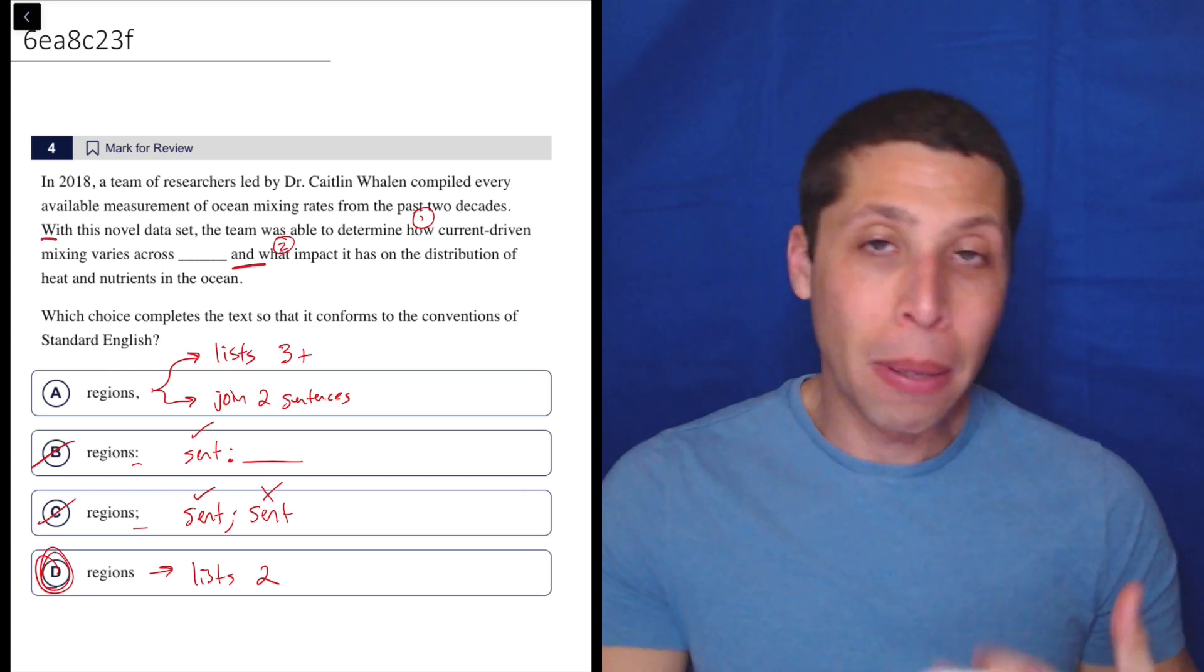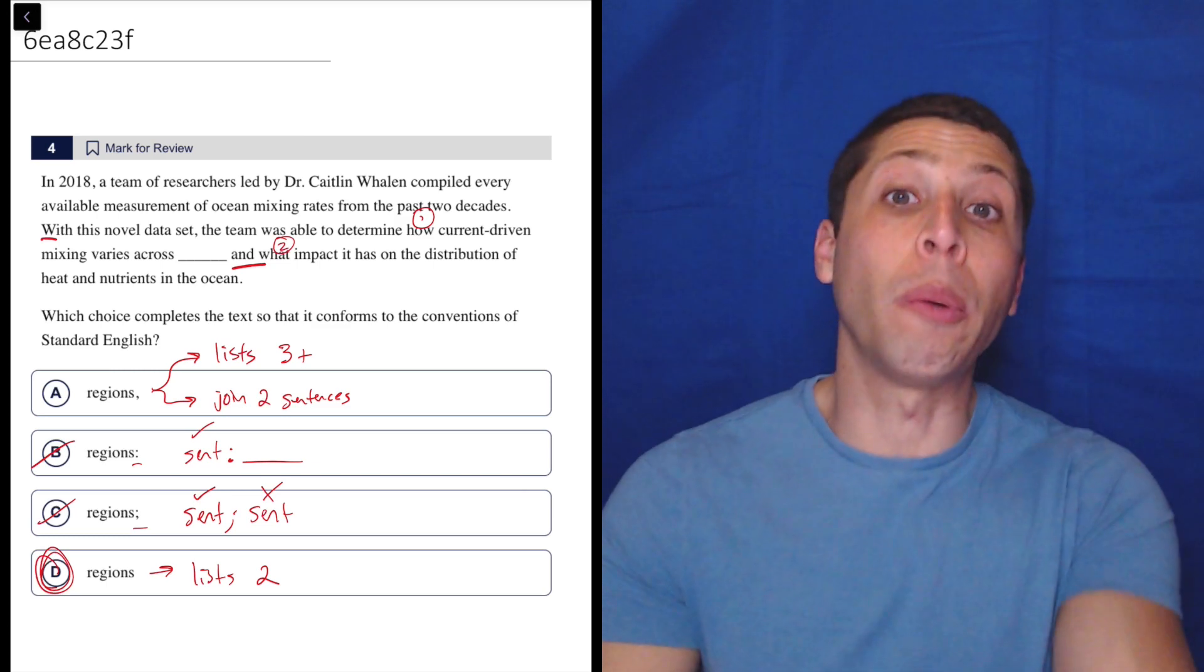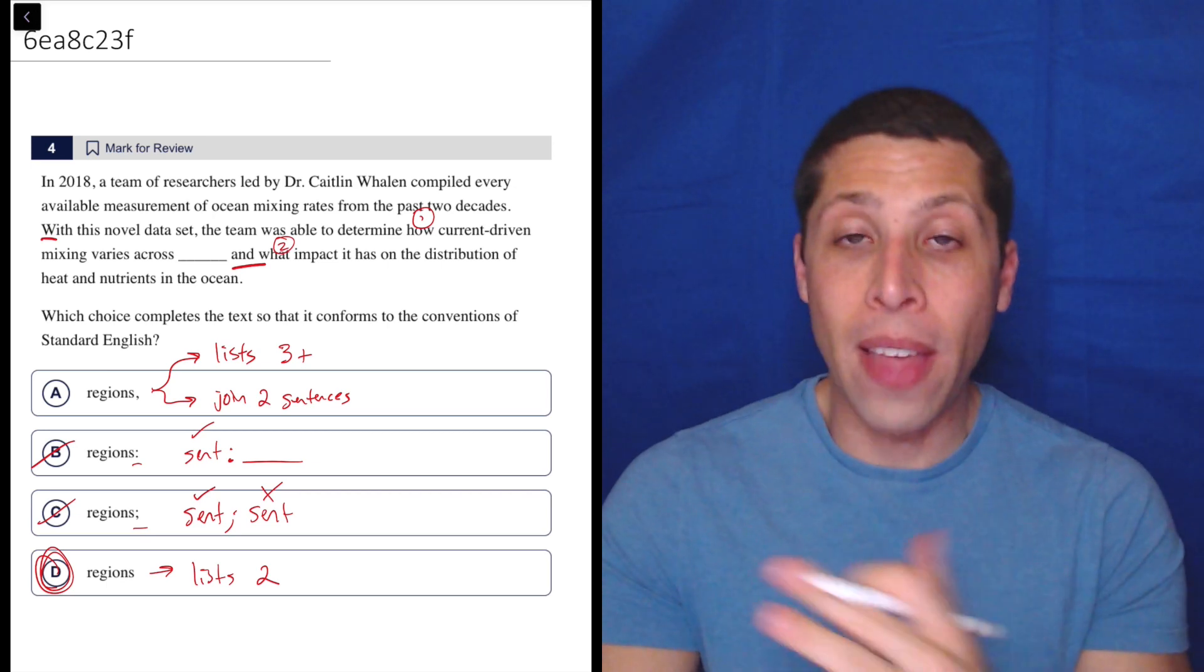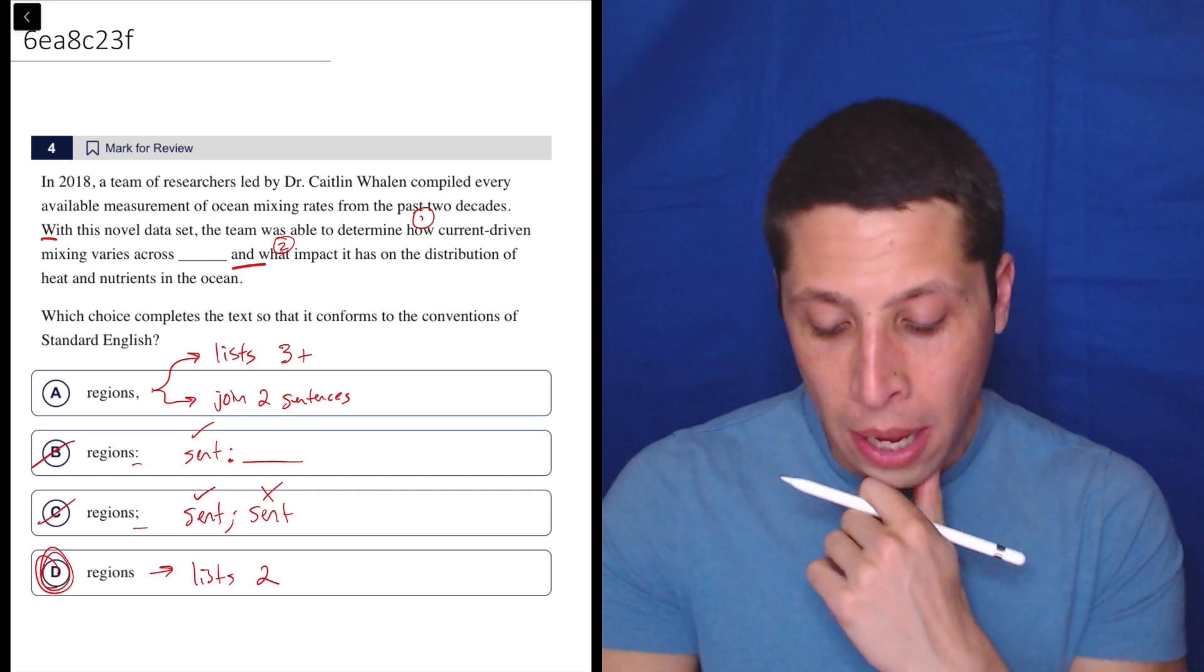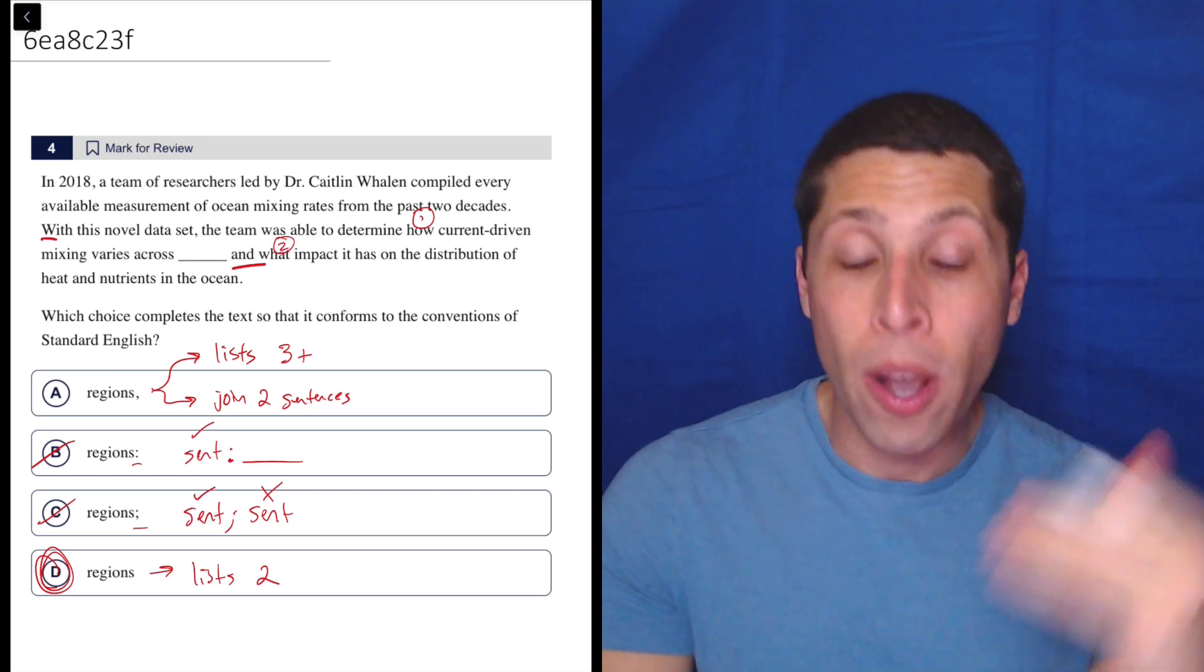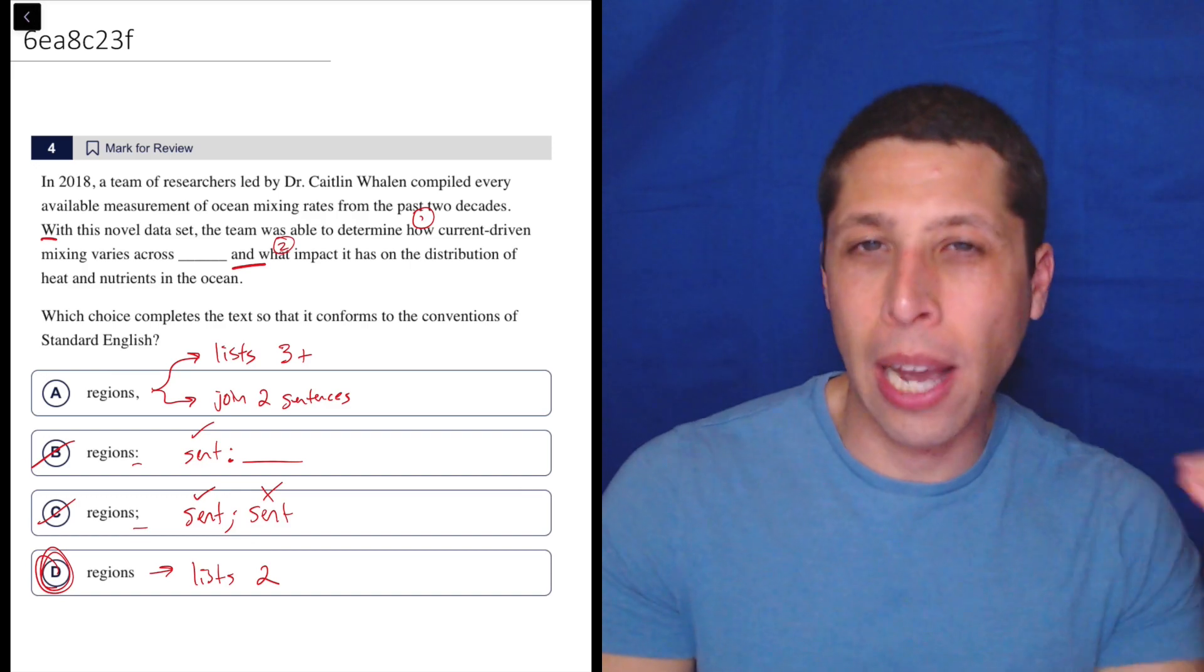So it doesn't make any sense to do that. Plus, if we were going to use the semicolon, we would remove the word and. So that's also weird for that reason too. But they definitely know that you associate the word and with commas.